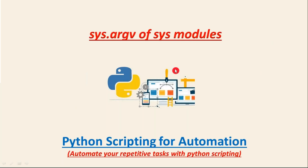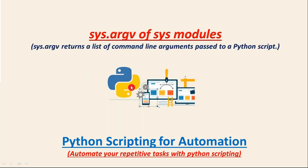Friends, here we are going to discuss about one of the operations from the sys module that is called sys.argv. What is this? sys.argv returns a list that consists of command line arguments which are passed to your Python script. Simply, it is giving a list — it is a variable, and actually it is one of the operations from your sys module. An operation may be a function or a variable, so sys.argv is giving a list.